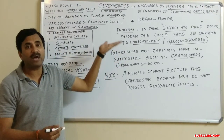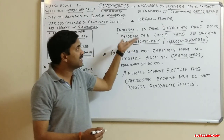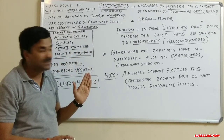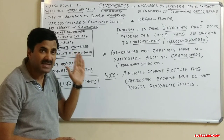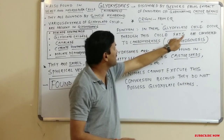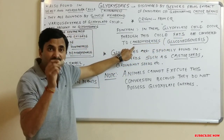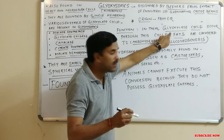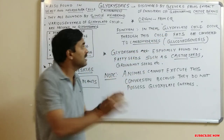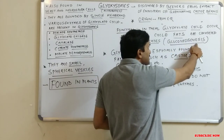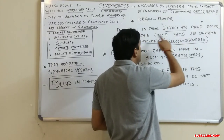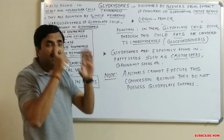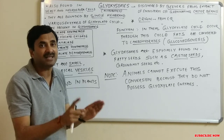The glyoxylate cycle is a cycle by which fats are converted to carbohydrates. This conversion of fat into carbohydrate by the glyoxylate cycle is called gluconeogenesis. So a very important feature of the glyoxylate cycle is that gluconeogenesis occurs within it.